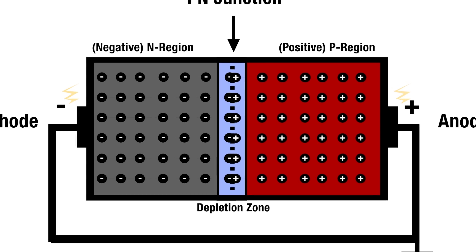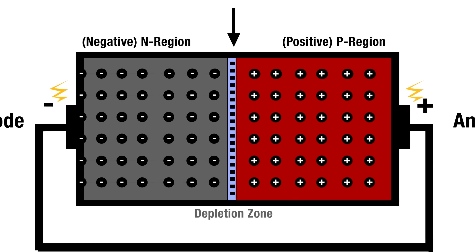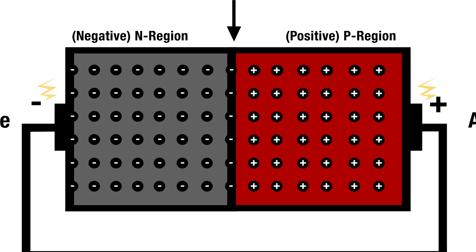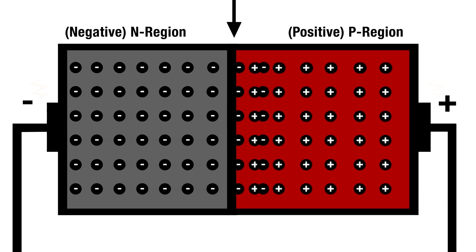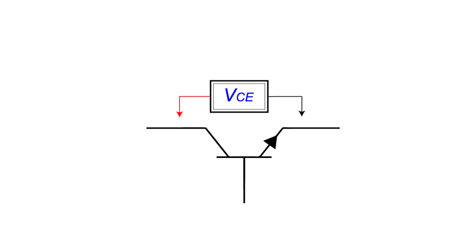From our diodes lesson, we know that diodes require a forward voltage of 0.7 volts before they turn on, allowing current to flow. In a standard NPN transistor, when 0.7 volts is applied between the base and the emitter, the transistor turns on, allowing current to flow from the collector to the emitter.